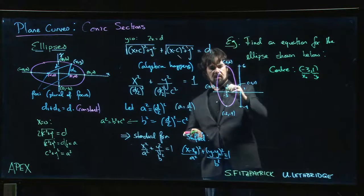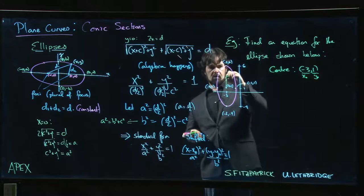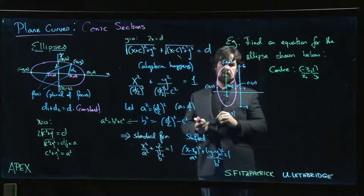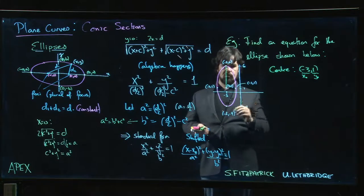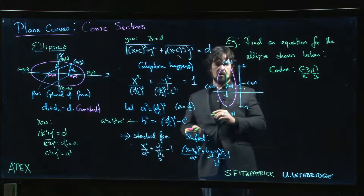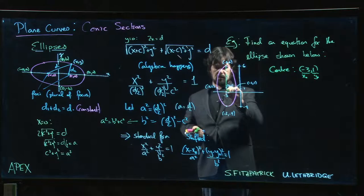Well, we're going from 1 up to 6, so that's a distance of 5. And the same thing going down, from 1 down to minus 4, that's also a distance of 5.